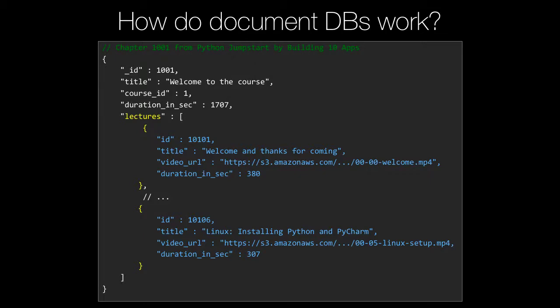Let's begin by talking about document databases. How do they work? Document databases in some ways are very much like standard relational databases. They have what you would think of as columns — title, course ID, and duration in seconds, for example. But they also have nested data. In a relational database, we might have a lectures table with a foreign key constraint back to a chapter. But in a document database, we can embed those lectures inside the chapter object. Often we spend so much time building up an object hierarchy and then tearing it apart into third normal form, normalizing our data, and then building it back up. This object-relational impedance mismatch makes it hard to reason about our code. With document databases, we can model our data the same way our application wants to use it.